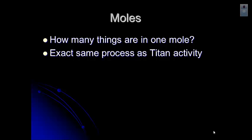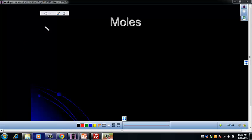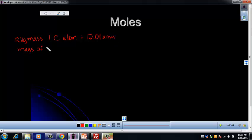So let's see if we can figure out how many things are in one mole. It's the same process as the Titan activity. So we know the mass of one mole. We know the mass of one atom of carbon. And then we can figure out how many atoms are in that. So let's take a look. So think about our average mass of the one carbon atom. So we know that the average mass of one carbon atom is going to be 12.01 AMU. And then we know that the mass of one mole of carbon atoms is 12.01 grams. So remember, same number, two different units. So just like the Titan activity.